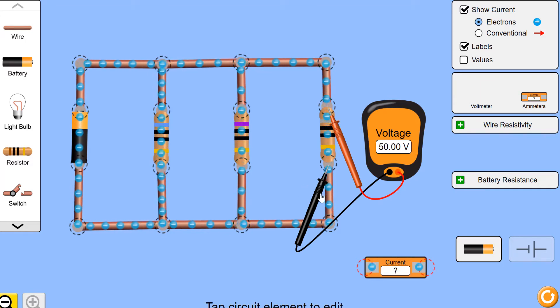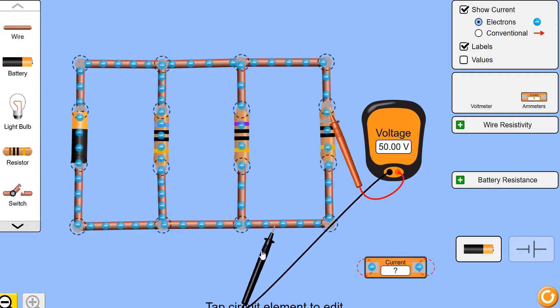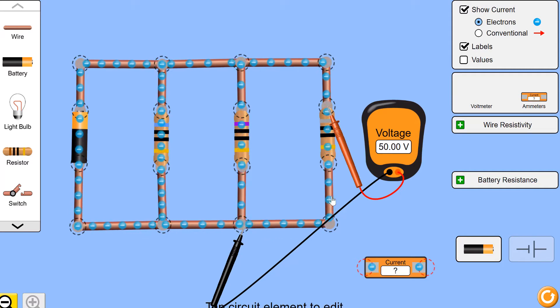You'll notice when you clip on, as long as this lead is touching the conductor anywhere, the reading is the same. Because a perfect conductor, which is what these wires are, has no resistance and is an equipotential surface.